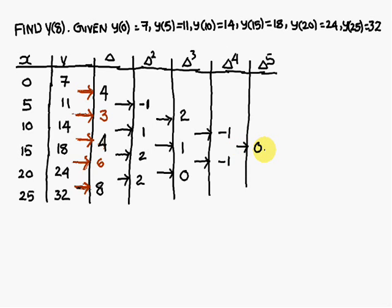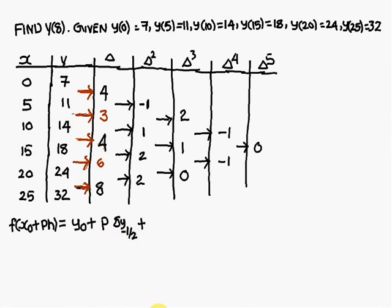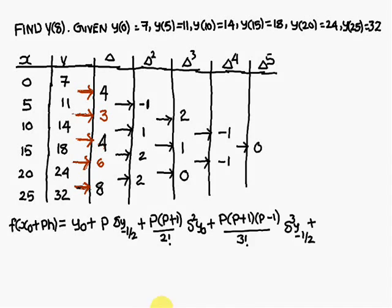The fifth difference is 0, so the difference table is complete. The Gauss backward interpolation formula is: f(x₀ + ph) = y₀ + P·Δy₋₁/₂ + [P(P+1)/2!]·Δ²y₀ + [P(P+1)(P−1)/3!]·Δ³y₋₁/₂ + [P(P+1)(P−1)(P+2)/4!]·Δ⁴y₀.